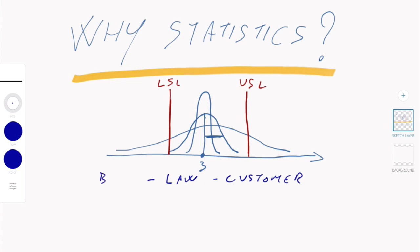Specification limits are usually given by law, by your customer, or by your boss — but usually it is the customer who asks that your bars have a length of three on average, but not less than 2.8 (the lower specification limit) and not more than 3.2 (the upper specification limit). So the point is how much variability you have around your target value.